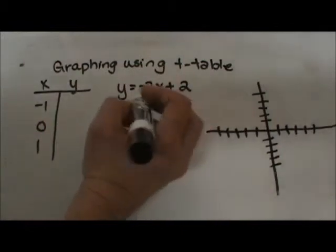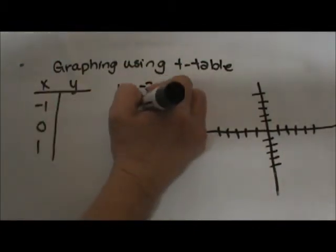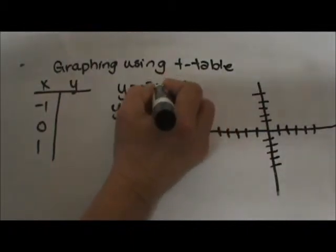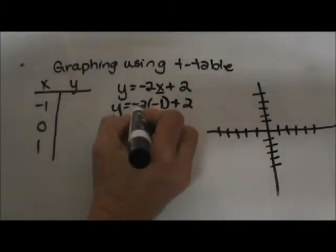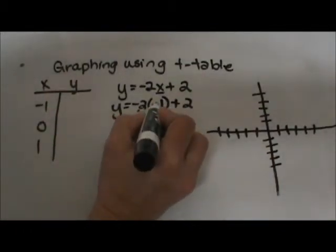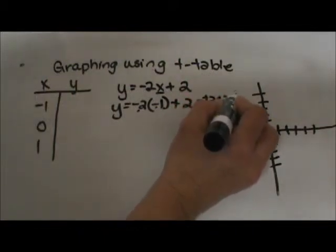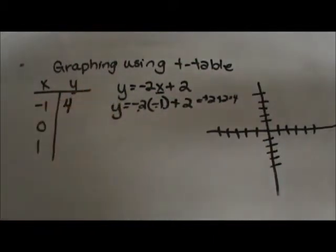So let's start with negative 1. I'm going to leave my y in there and plug in negative 2 times negative 1 plus 2. So I've just substituted x as negative 1. Negative 2 times negative 1 gives me positive 2 plus 2, which gives me 4. So when I plug in negative 1, I get out positive 4.